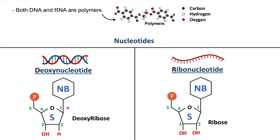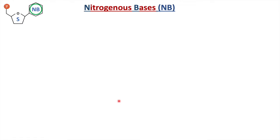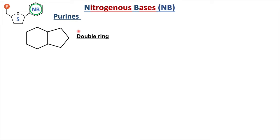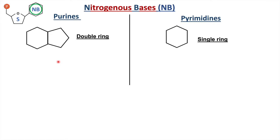Nucleotides contain a sugar molecule, a nitrogenous base, and a phosphate group. There are basically two types of nitrogenous bases. One is called purines, which has a double ring — one six-carbon ring and one five-carbon ring. The second is called pyrimidines, which has only a single six-carbon ring.